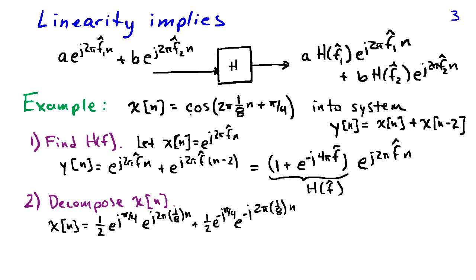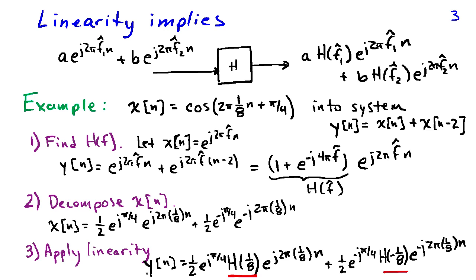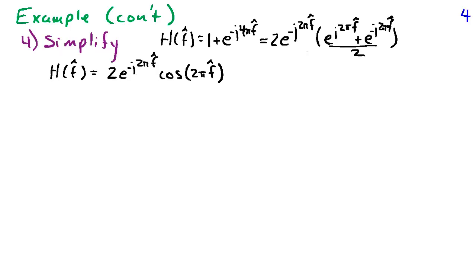We've written our input cosine as a weighted sum of two complex sinusoids at frequencies one-eighth and minus one-eighth cycles per sample. Applying linearity to find y of n: putting in e to the j 2 pi one-eighth n gives output e to the j 2 pi one-eighth n times the frequency response evaluated at one-eighth. The second term uses the frequency response evaluated at negative one-eighth. Hence our output y of n is the sum of these two complex sinusoids with the constants as weighting factors. We will now simplify this answer further.